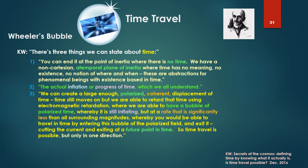Three. We can create a large enough polarized coherent displacement of time. Time still moves on, but we are able to retard that time using electromagnetic retardation, where we are able to have a bubble of polarized time, whereby it is still inflating. Time still progresses, but at a rate that is significantly less than all surrounding magnitudes. Whereby you would be able to travel in time by entering this bubble of the polarized field and exit it, cutting the current, and exiting at a future point in time. So time travel is possible, but only in one direction.